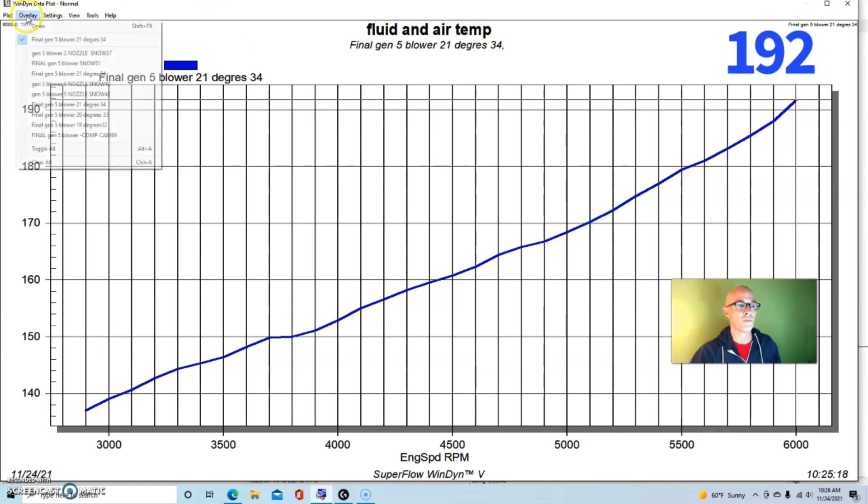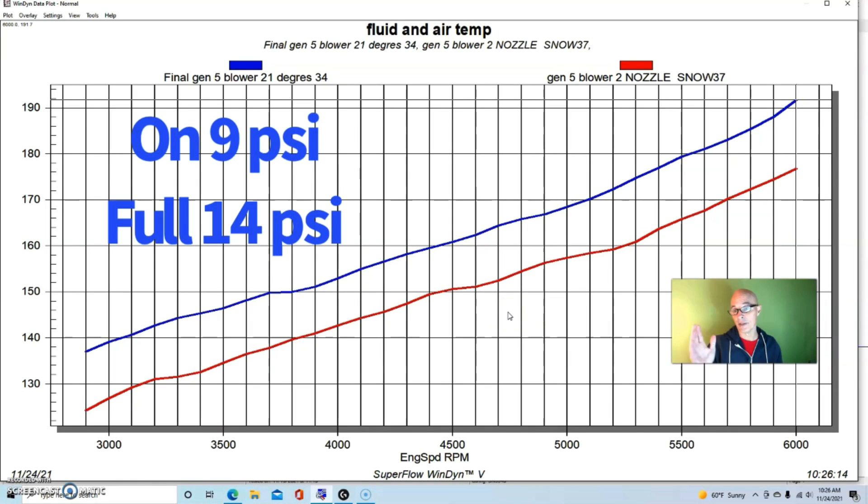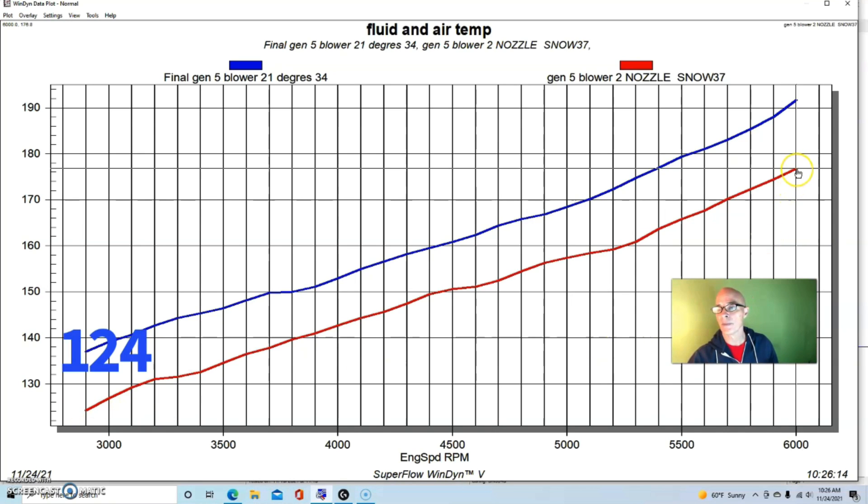Now here's what happened to the charge temperature when we introduced the number two nozzle. We turned it on at 9 pounds and then it was all in by 14 pounds and we dropped the charge temperature. The starting temperature was 124 degrees and it ended up at 177 degrees.